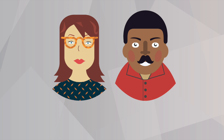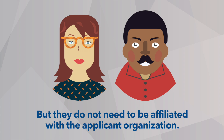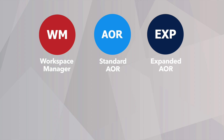After a workspace has been created, the workspace owner can add collaborators called participants. These participants must be registered with Grants.gov, although they do not have to be affiliated with the applicant organization. The following roles allow a user to add participants as a workspace owner: Workspace Manager, Standard AOR, Expanded AOR, and a custom role with the own workspace privilege.